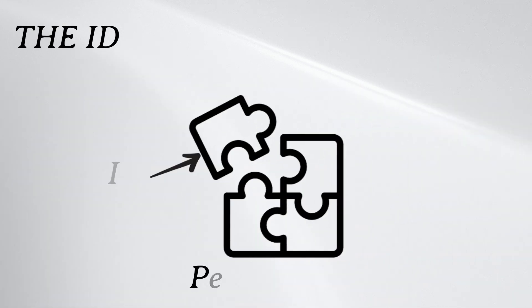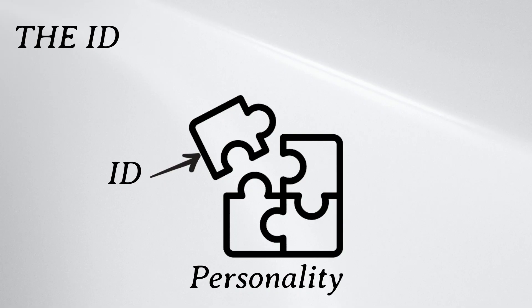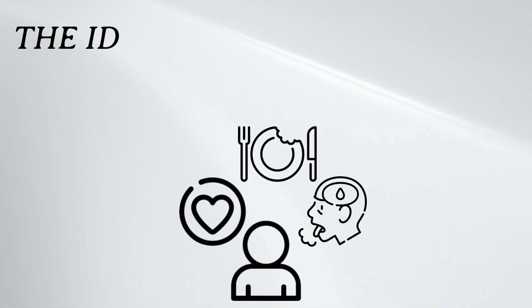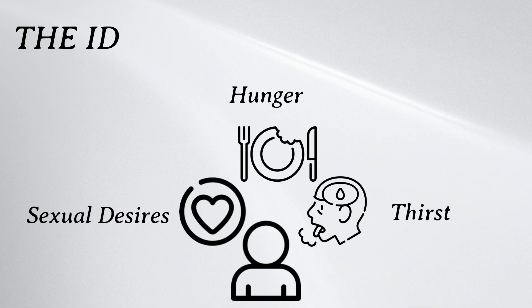Number one is the ID. The ID is the most primitive part of the personality. It operates on the pleasure principle, seeking immediate gratification of basic biological and psychological needs, such as hunger, thirst, and sexual desires. It's impulsive, irrational, and unconscious.